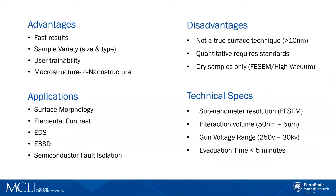Some advantages of SEMs include typically fast results depending on sample quantity, a variety of sample sizes from small amounts of powder to a full six-inch wafer, ease of user trainability, and coverage from macro to microstructure to nanostructure of materials. Some disadvantages relative to techniques like Auger spectroscopy or XPS: it's not a true surface technique, as the interaction volume is typically greater than 10 nanometers. Quantitative analysis requires standards, and dry samples are generally required in high vacuum modes with field emission SEMs.